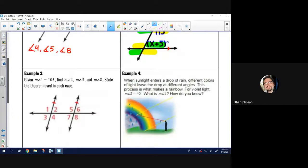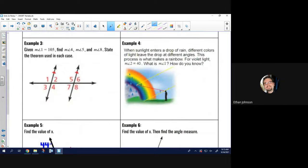In example 3. Given the measure, well, before I even read, I'm going to highlight. I'm going to do my zigzag. I'll do my opposite zigzag. Problem says, given measure of angle 1 equals 105 degrees, which I will write that down for angle 1. Find the measure of angle 4, measure of angle 5, and measure of angle 8. State the theorem used in each case.